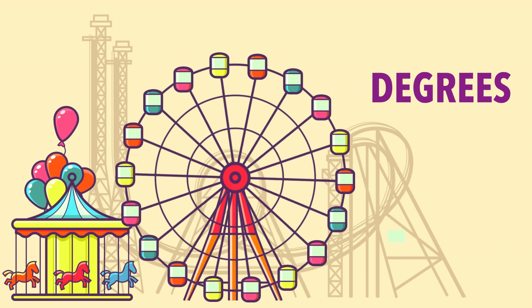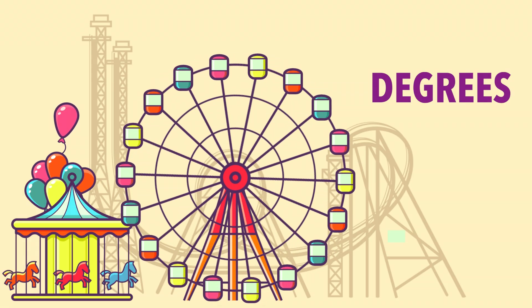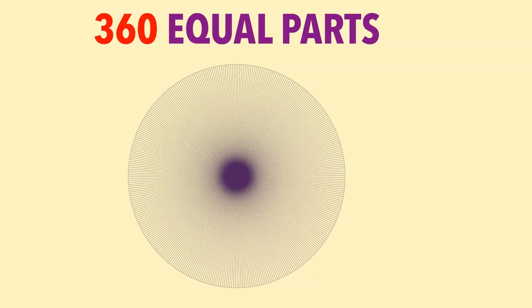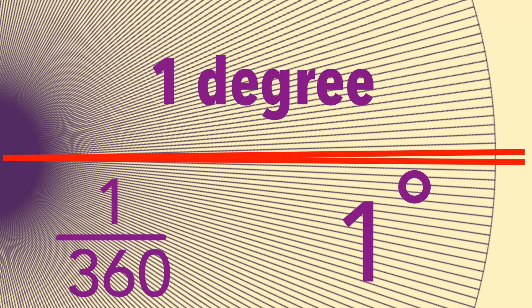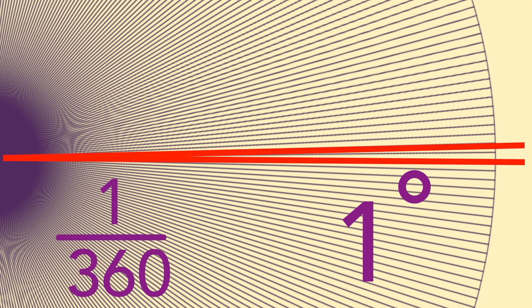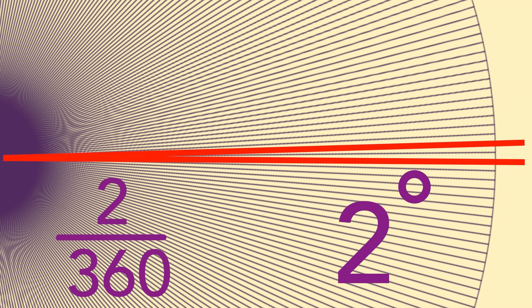Imagine a circle divided into 360 equal parts. An angle created by 1 over 360 of the circle measures 1 degree. 2 parts out of 360 equal parts would create 2 degrees, and so on.